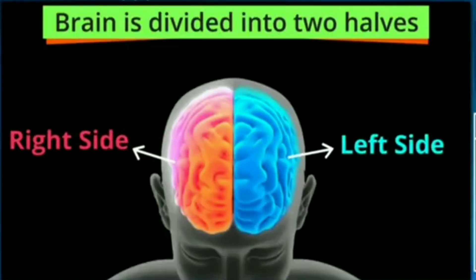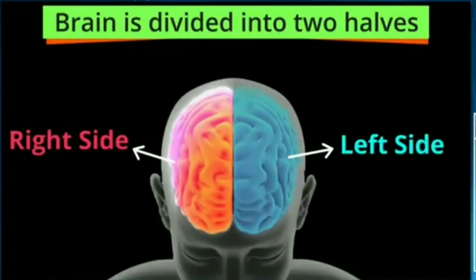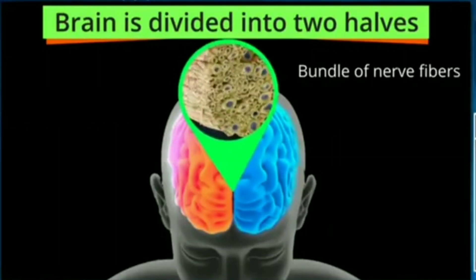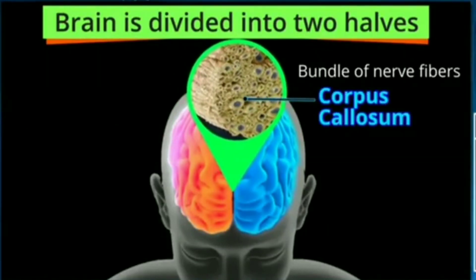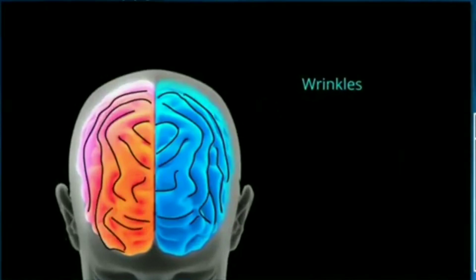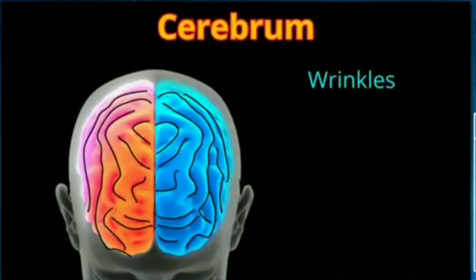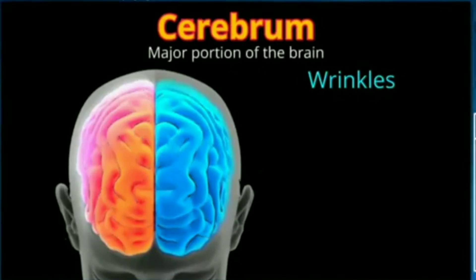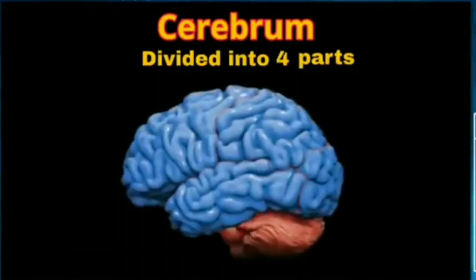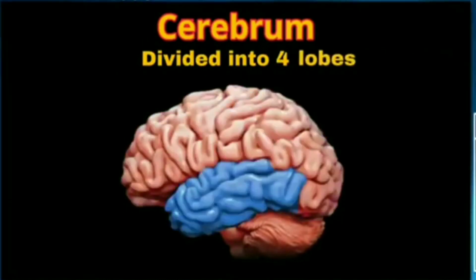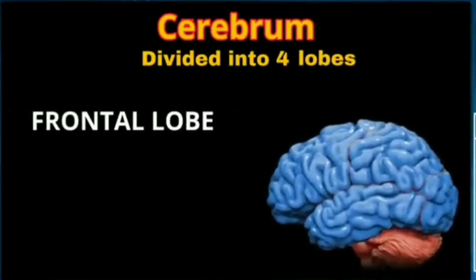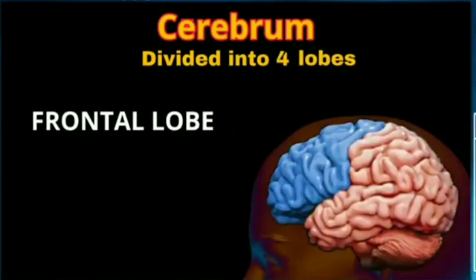The right half and the left half — both these halves are connected to each other by a bundle of nerve fibers called the corpus callosum. Our brain has wrinkles on its exterior surface and this wrinkly part is called the cerebrum, which makes up the major portion of our brain. The cerebrum is actually divided into four parts, or four lobes. The first one is called the frontal lobe.